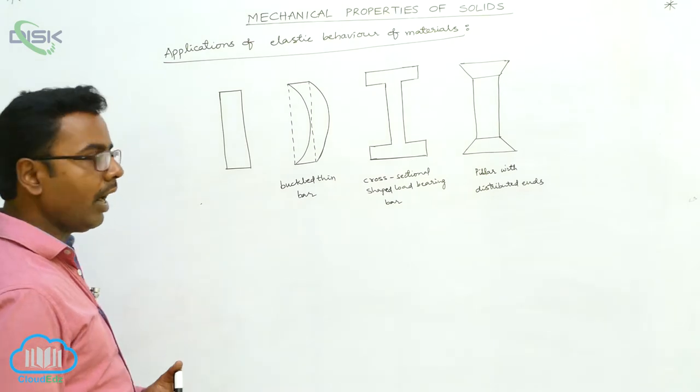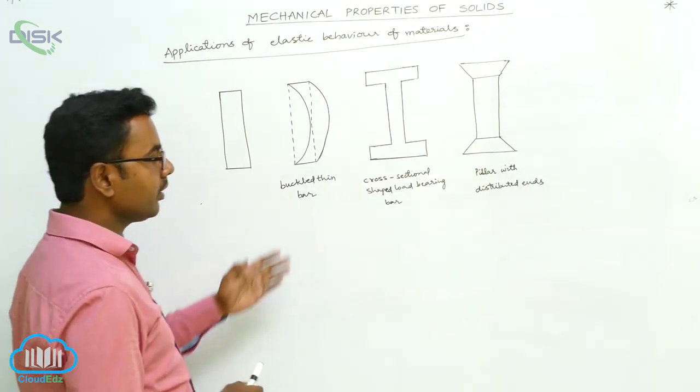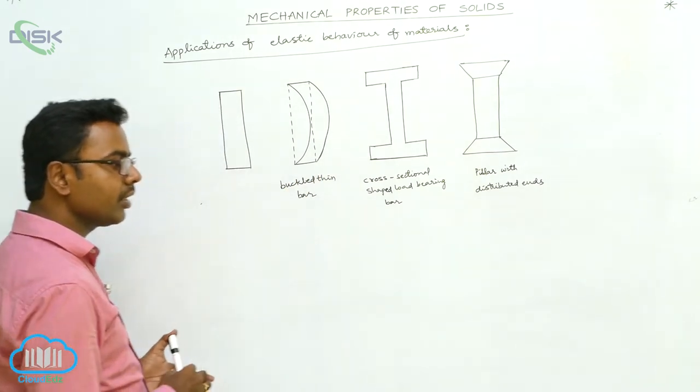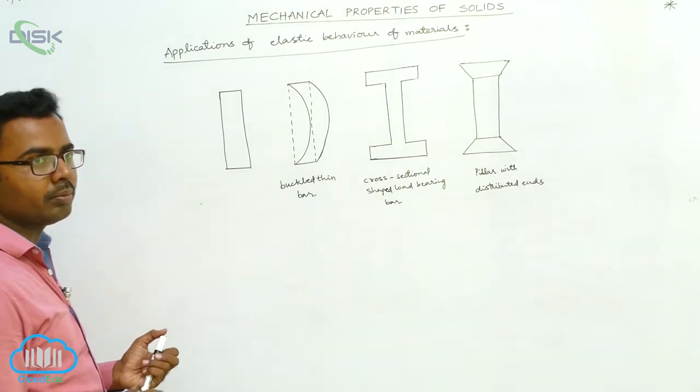And here in the construction of these bars, in the construction of pillars, we use steel. Why are we using steel here? Because steel is more elastic compared to all other materials.